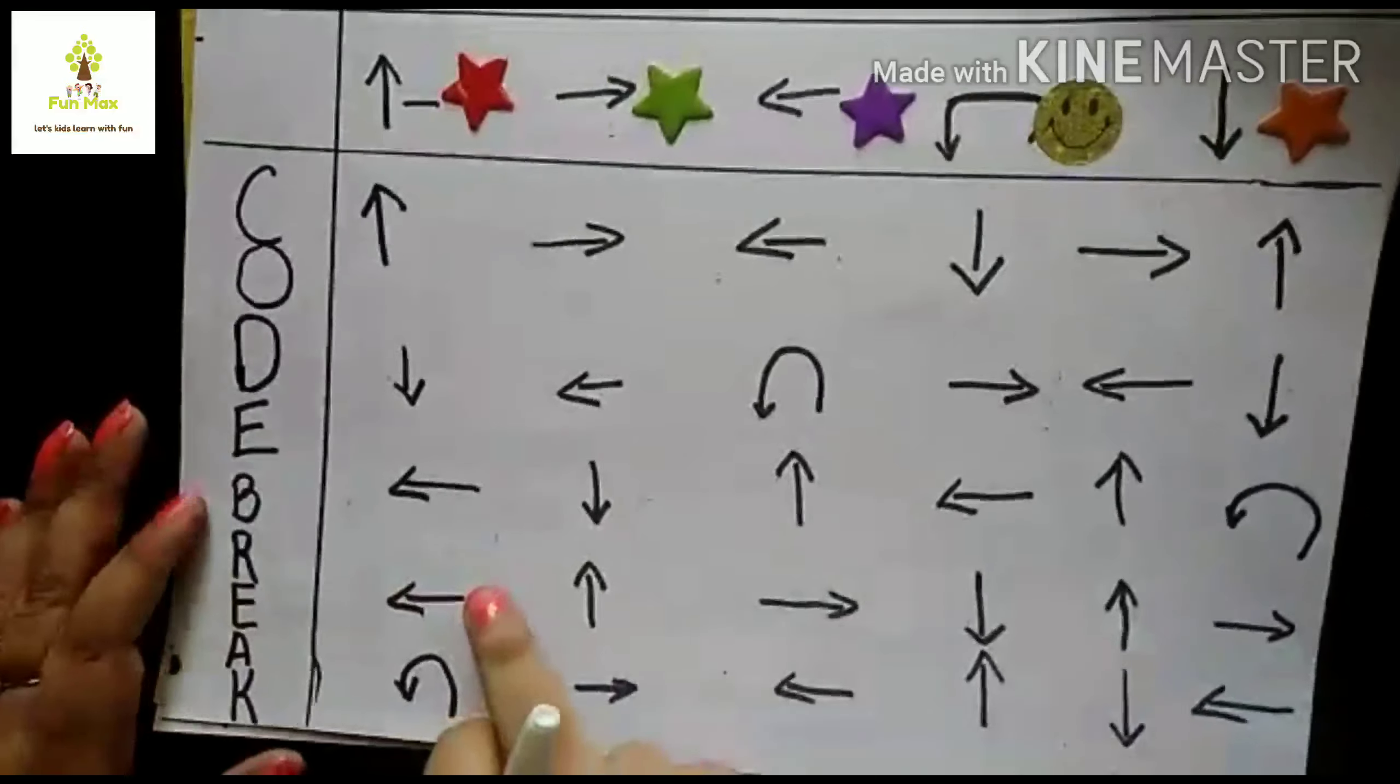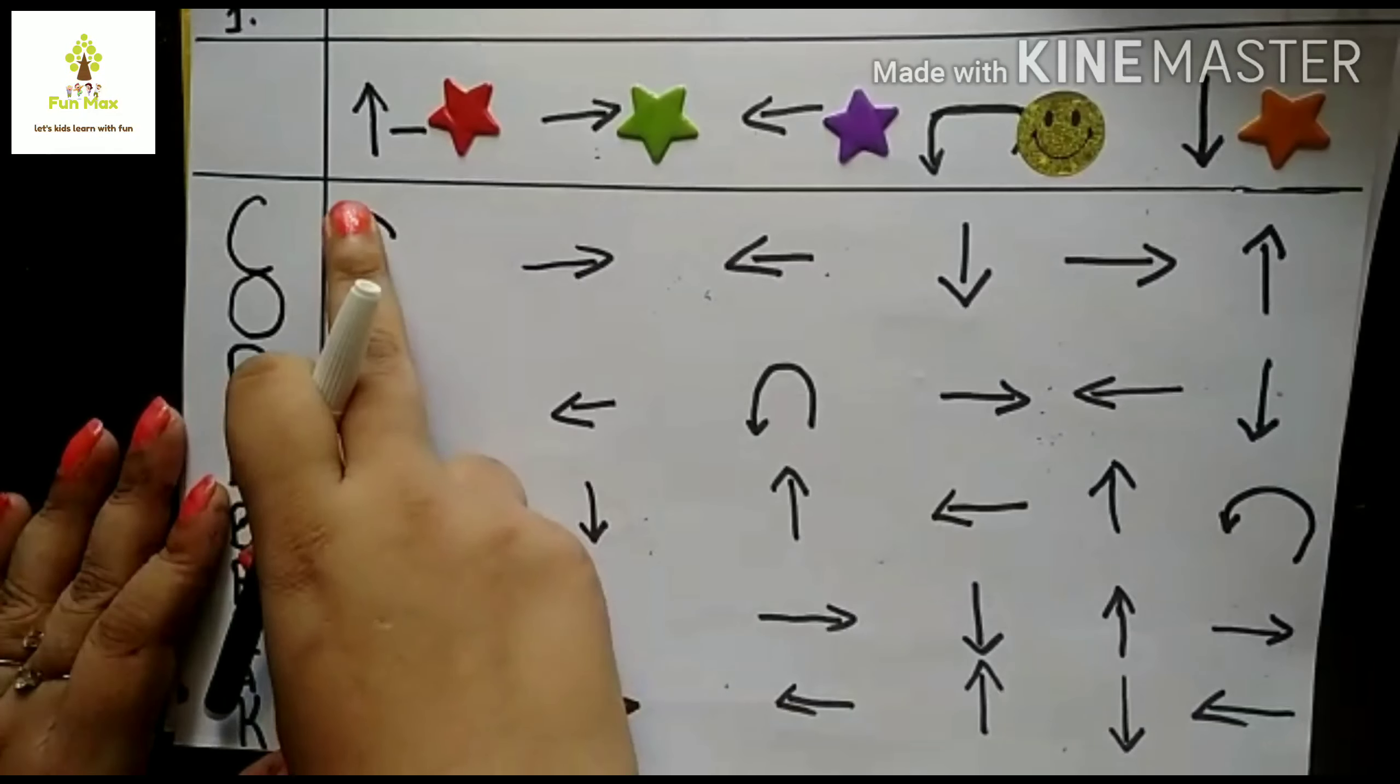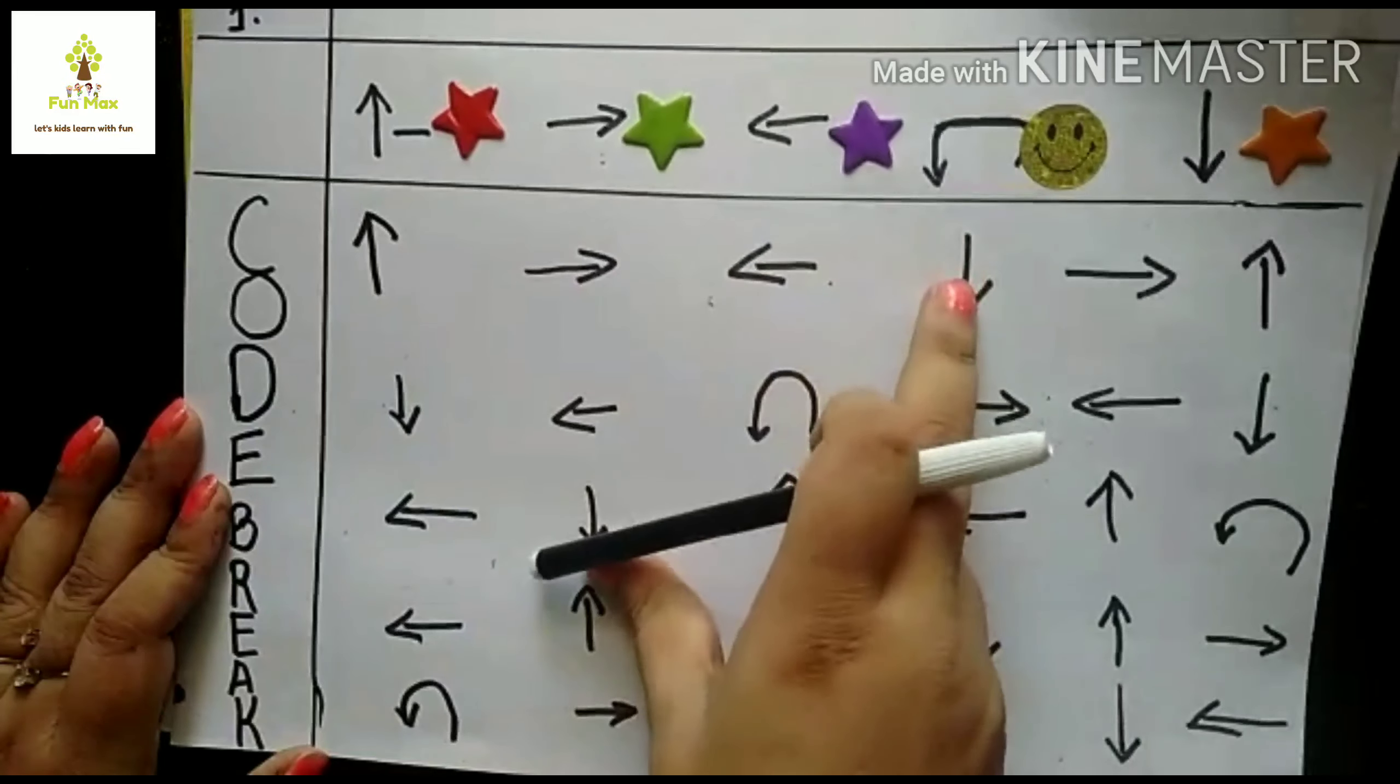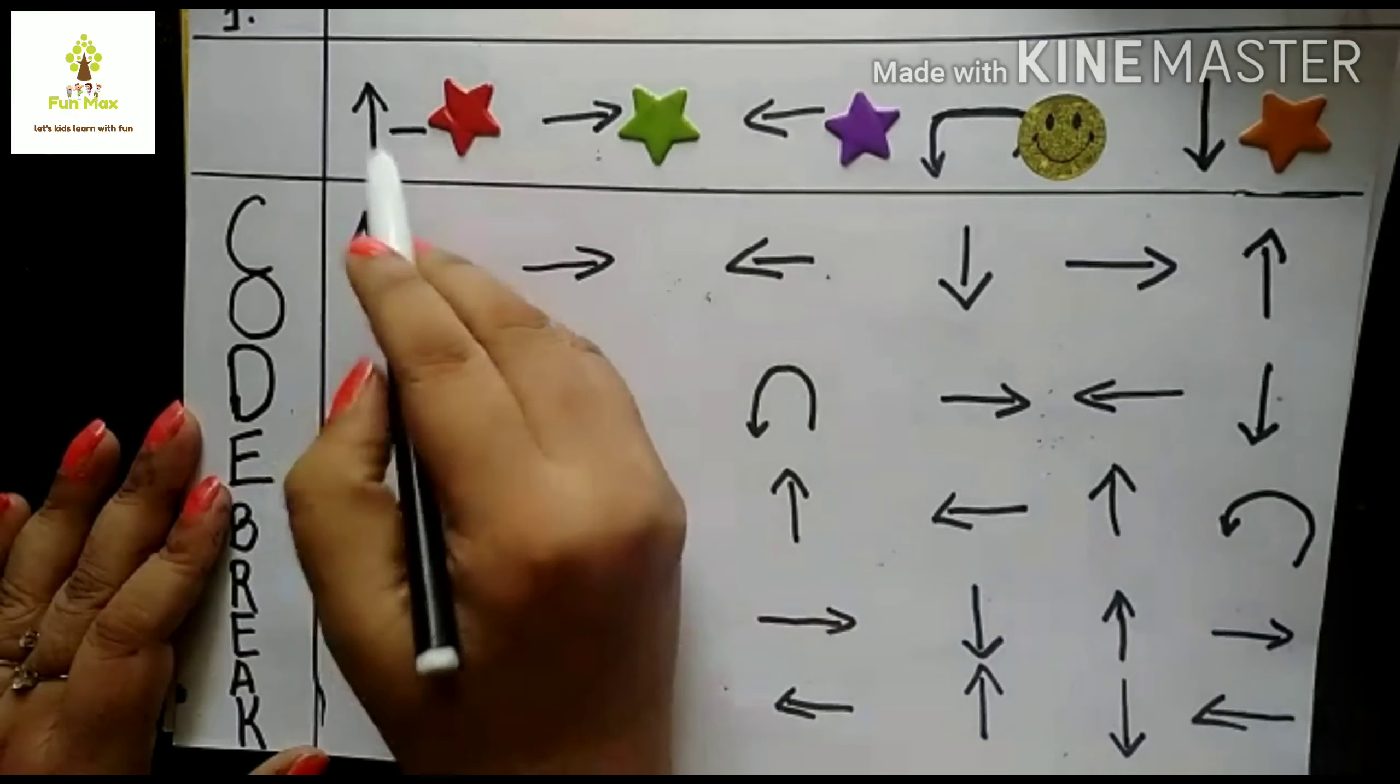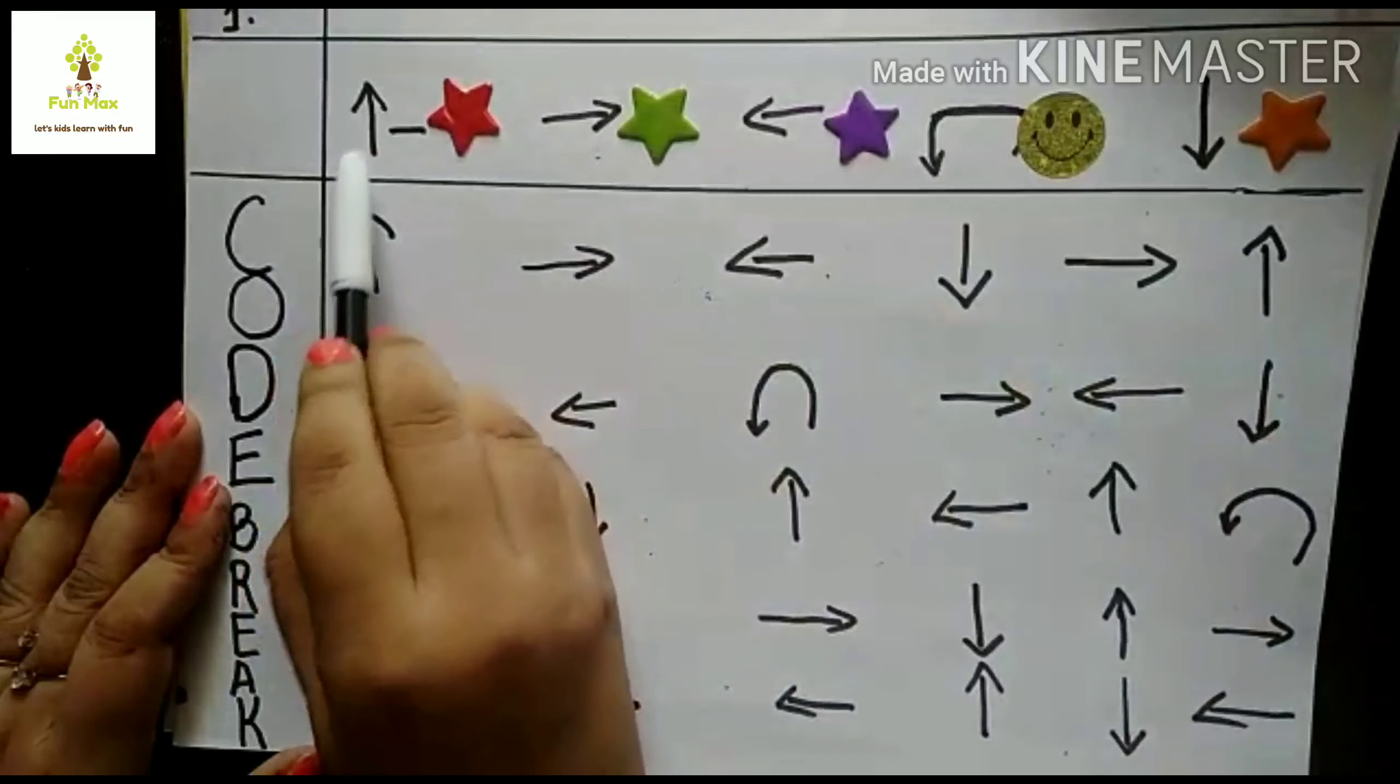Here, this is a coding brick. Up, right, left, down, right, left. I have some arrows here, and these are the identification symbols of the arrows.